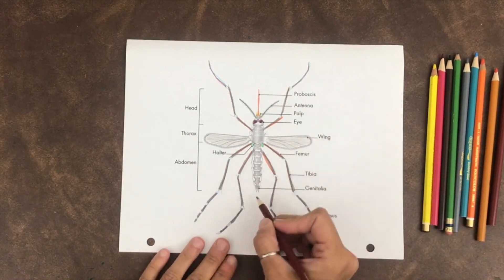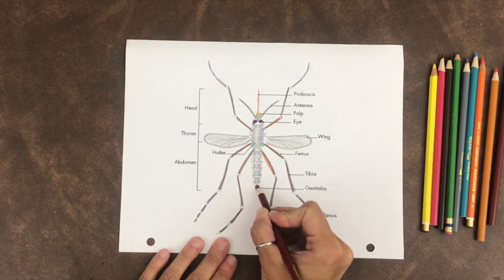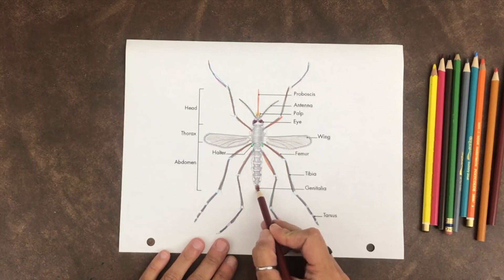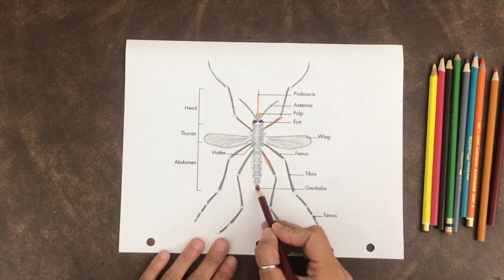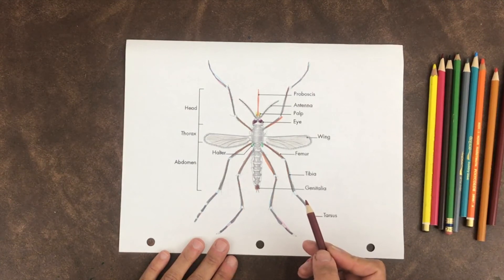Here is the genitalia. This is where you can tell if it's a female or male mosquito. This is where the eggs are released from the female.